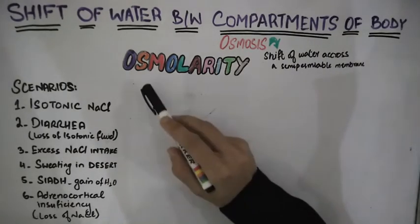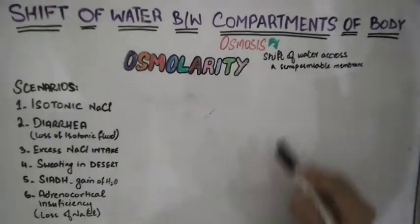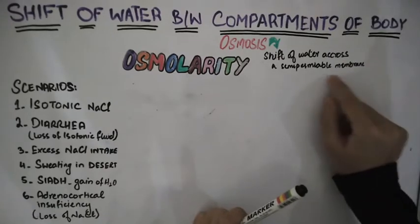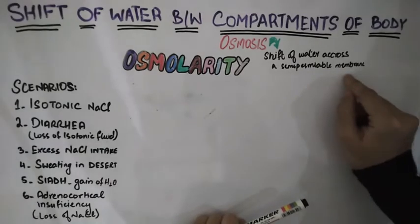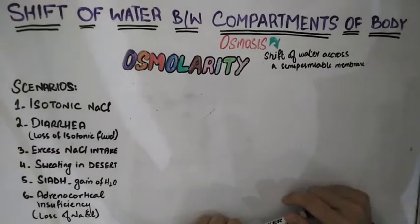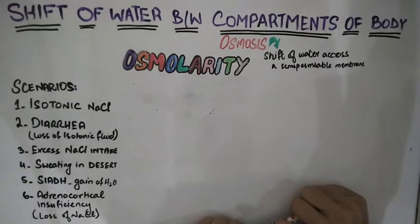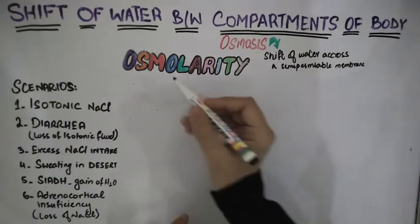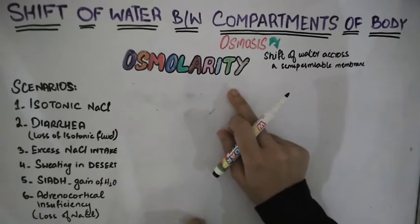Before starting, we should know two basic concepts: osmolarity and osmosis. Osmosis is the shift of water across a semi-permeable membrane — a membrane which has very small holes through which solute molecules cannot pass but water can. That is why these solute particles are called osmotically active particles, and osmosis occurs due to the difference in osmolarity between two solutions.